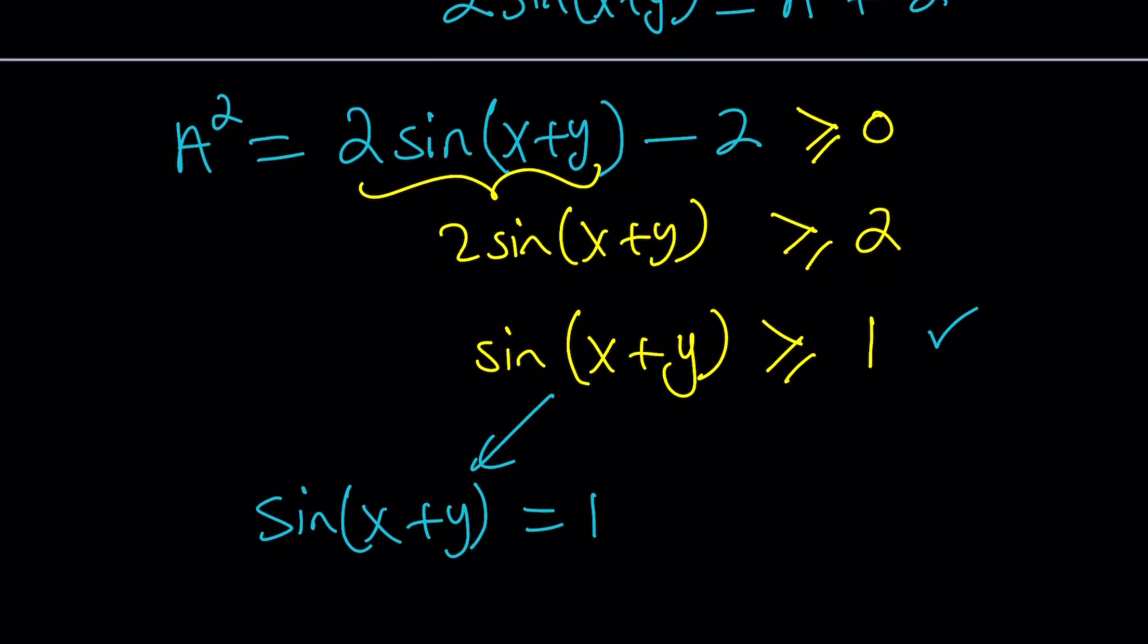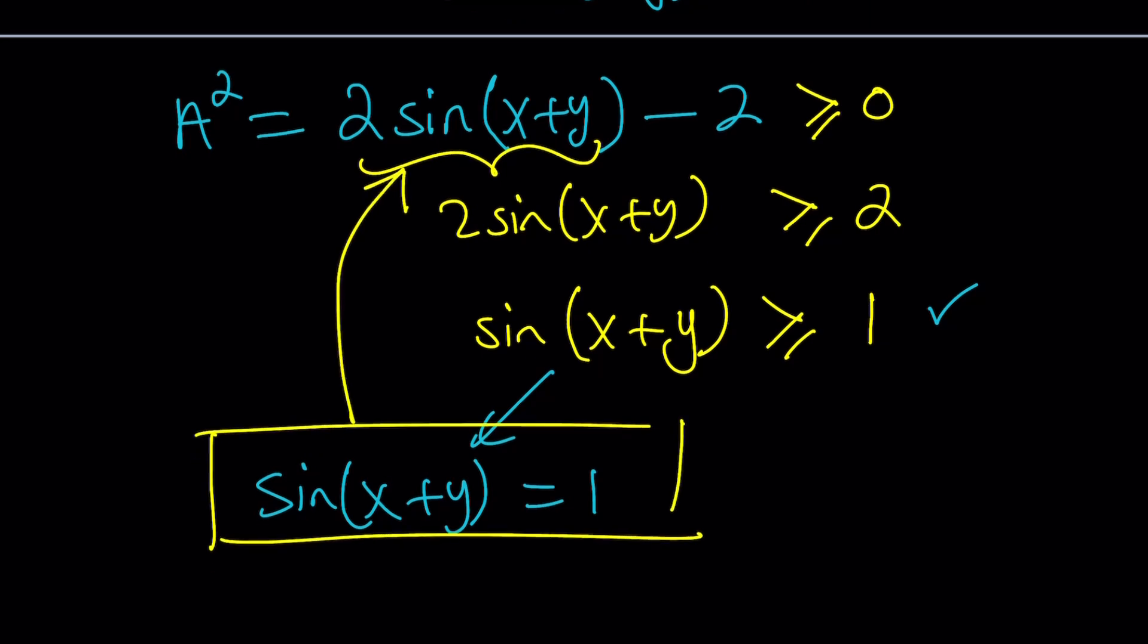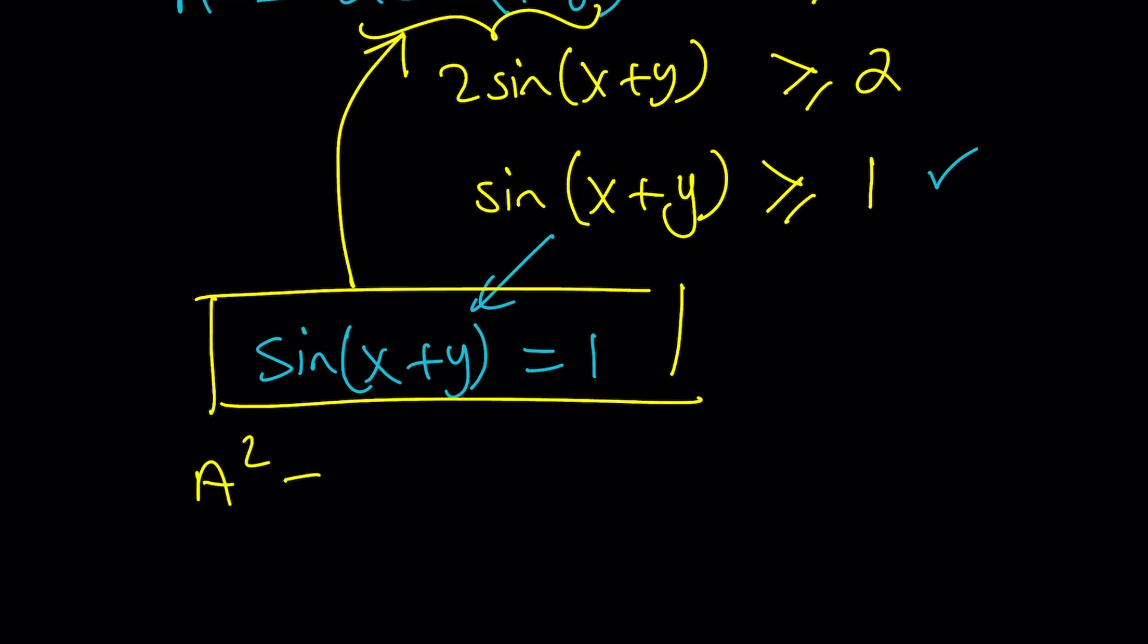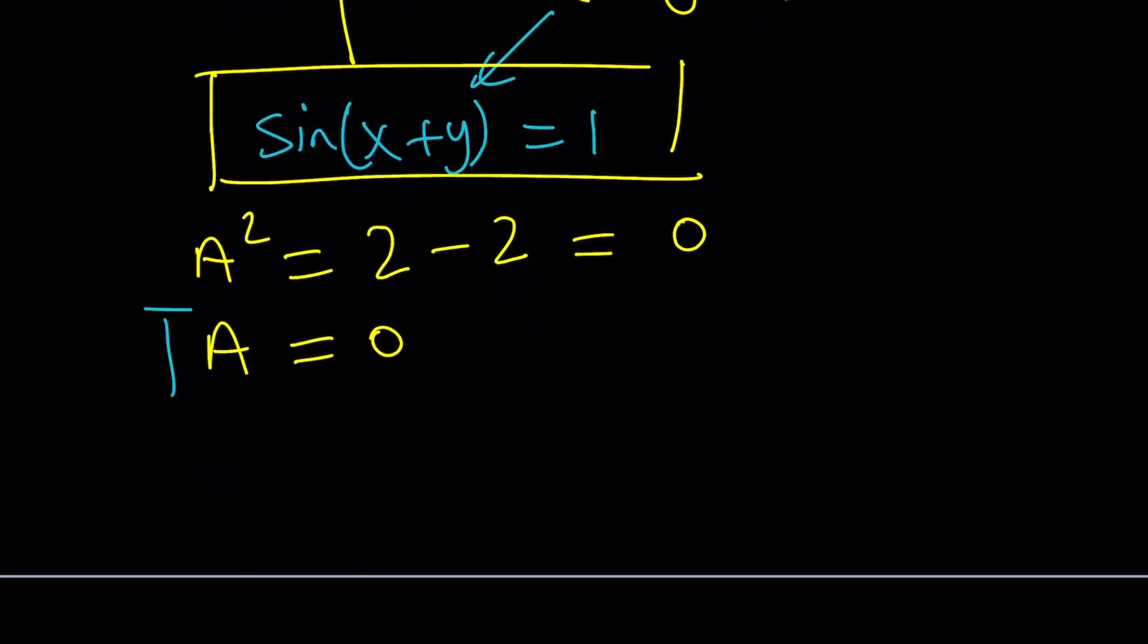So now we've got something important because sine of x plus y equals 1 implies something else. Take a look. If you plug it in, you get a squared equals 2 minus 2, which is 0. And from here, a becomes 0. Awesome. So we've got the value of a, and that's what we were looking for. And this brings us to the end of the first method.